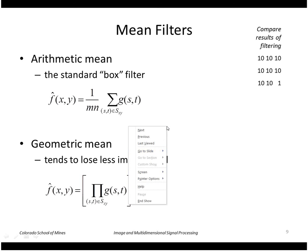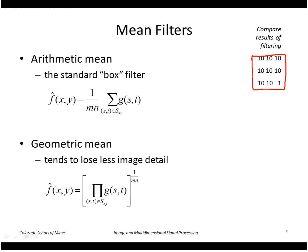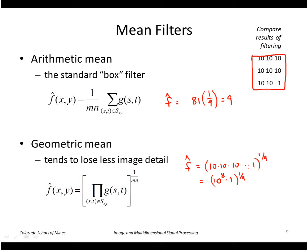For a three-by-three neighborhood where all values are ten except one point which is one: the arithmetic mean is the sum of all values (81) divided by 9, giving 9. For the geometric mean filter, we multiply all the values — 10 to the 8th times 1 — and take the 9th root, which gives approximately 7.2.